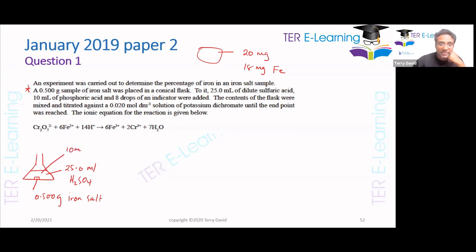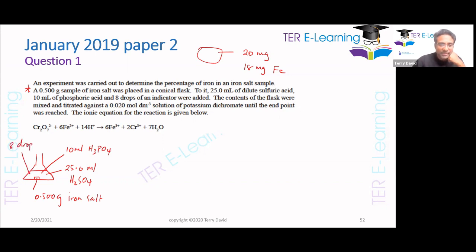You're also adding 10 milliliters of phosphoric acid — H₃PO₄ — and 8 drops of an indicator. Look at all the things you're adding. The contents of the flask were mixed and titrated against 0.020 mol/dm³ potassium dichromate until the endpoint was reached. They give us a formula; you're not expected to learn off some of these formulas.